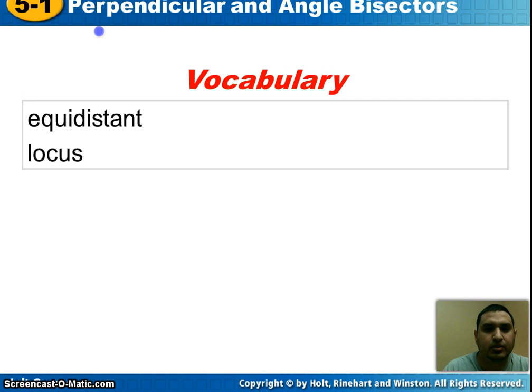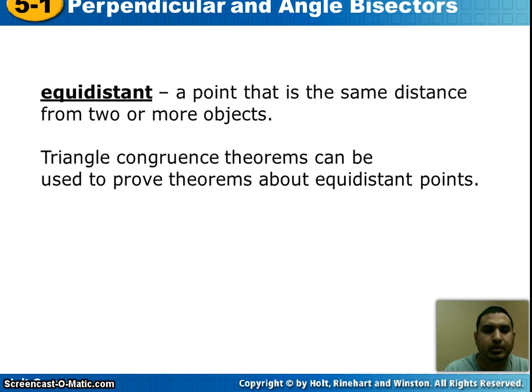Starting with the first vocabulary word: equidistant — that means a point that is the same distance from two or more objects.